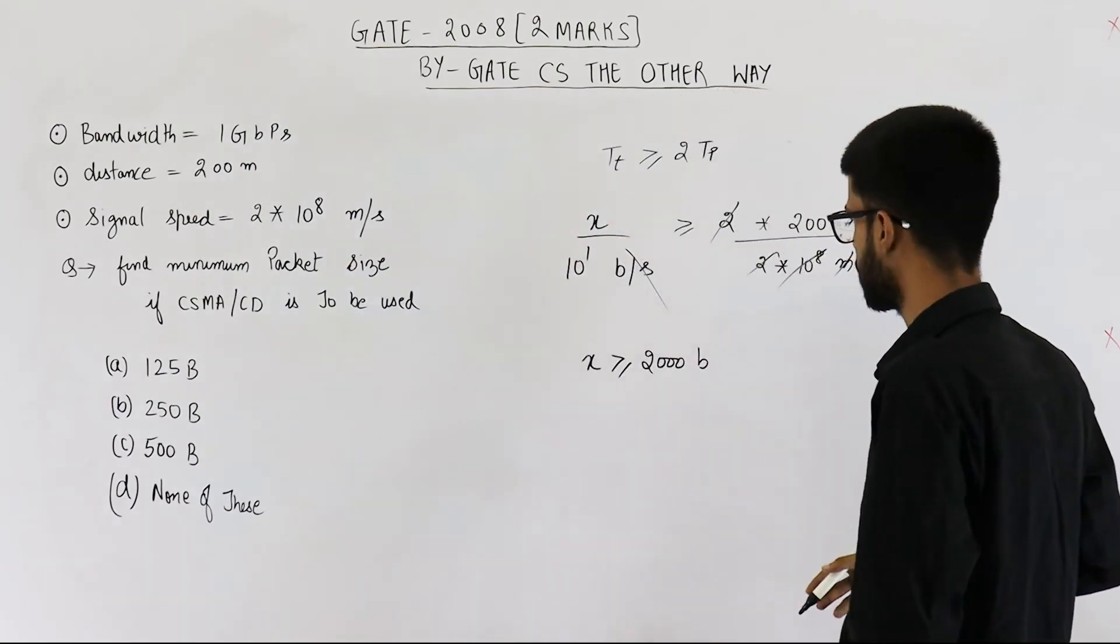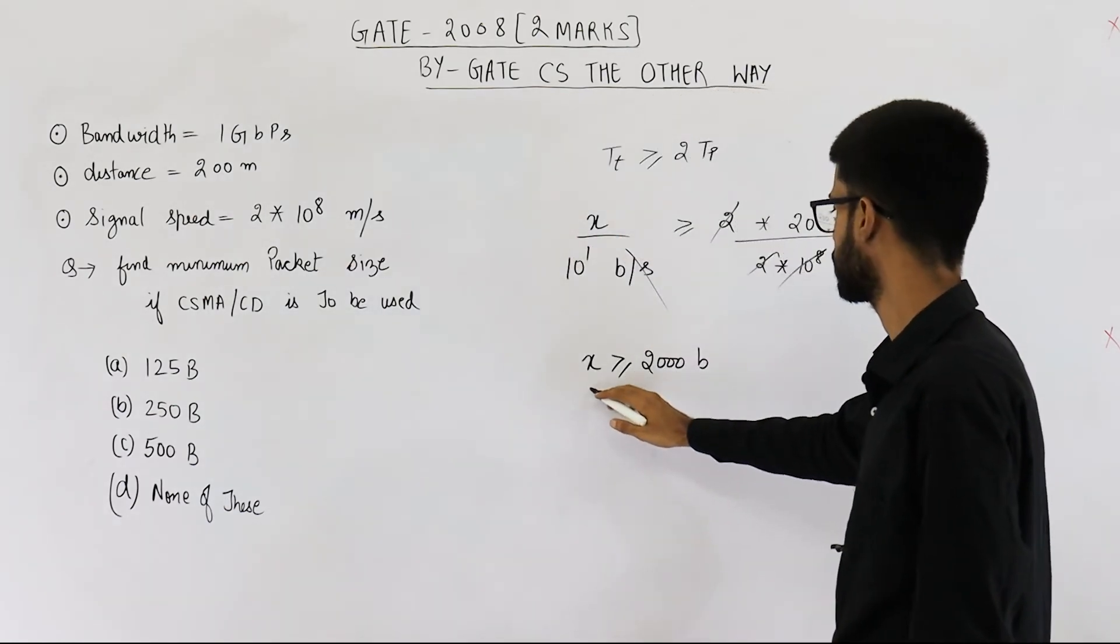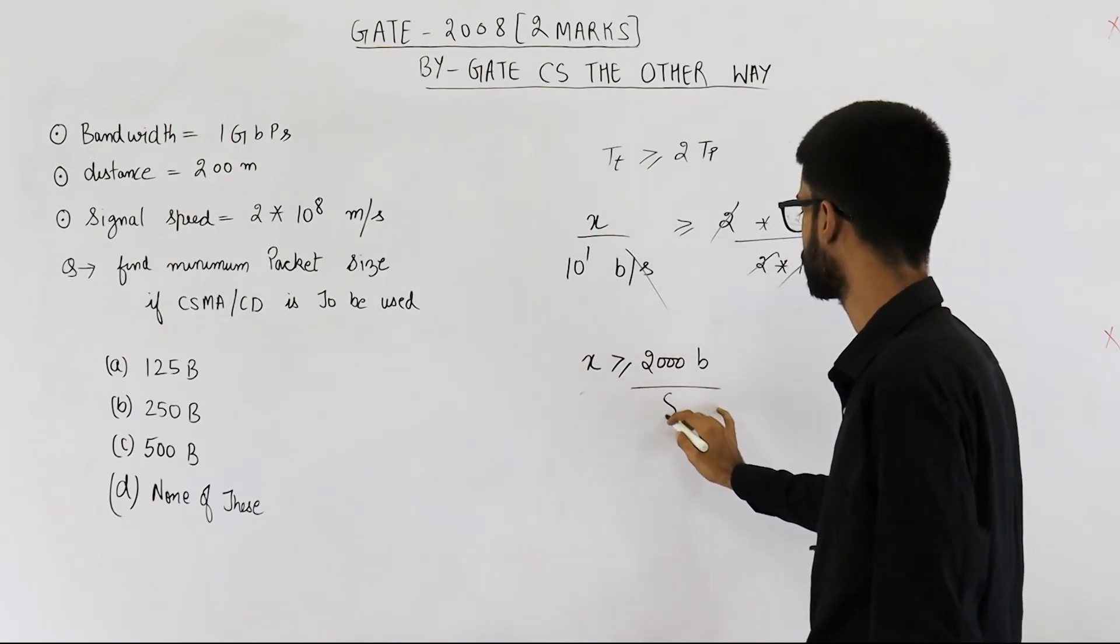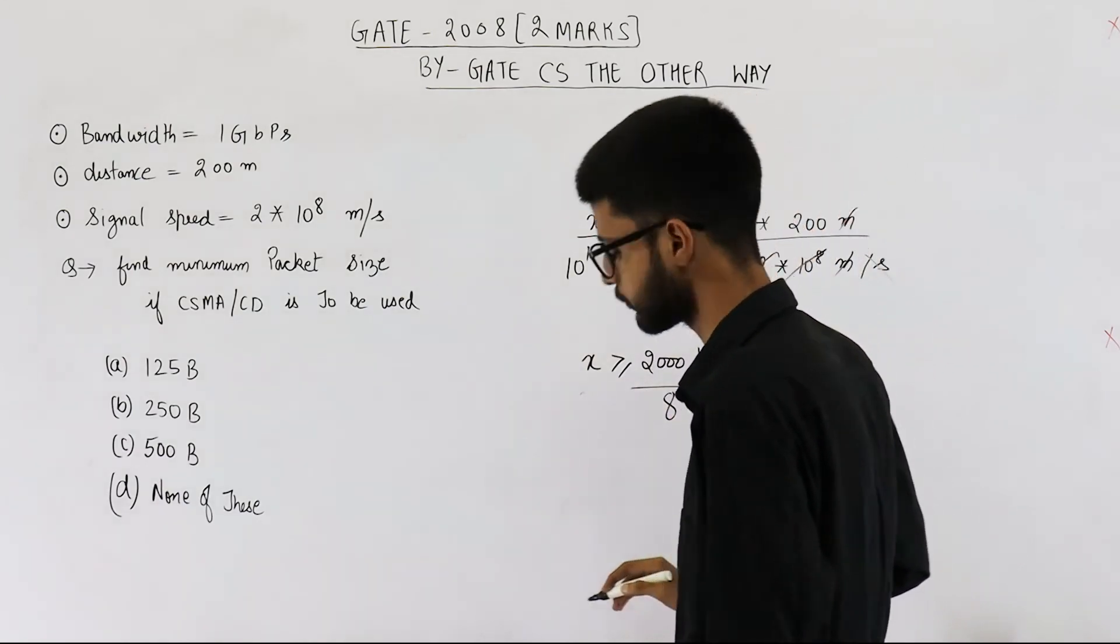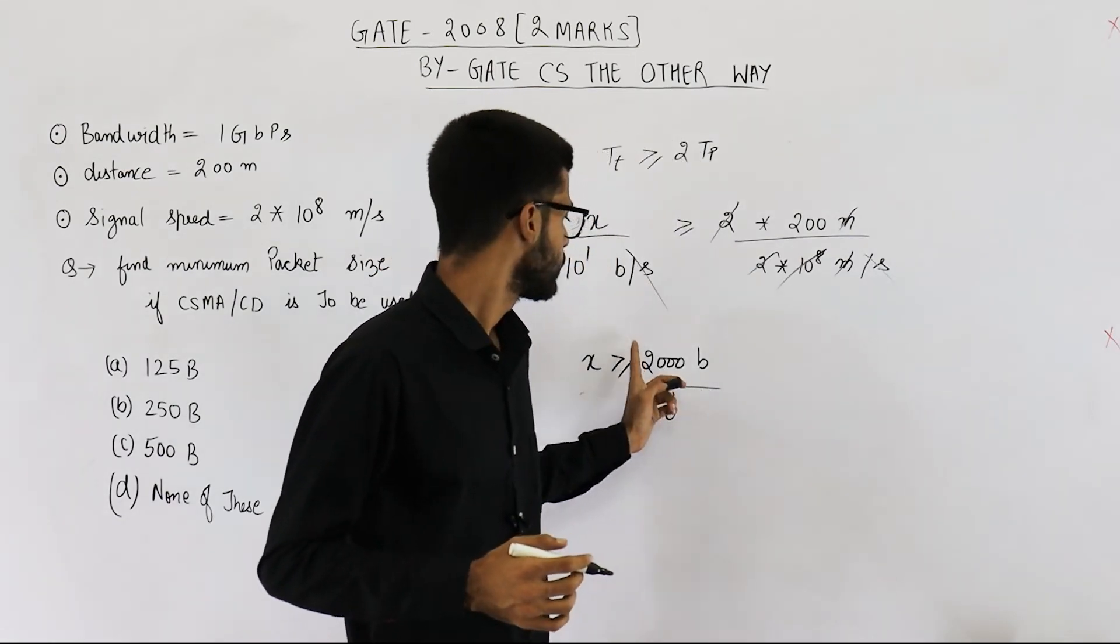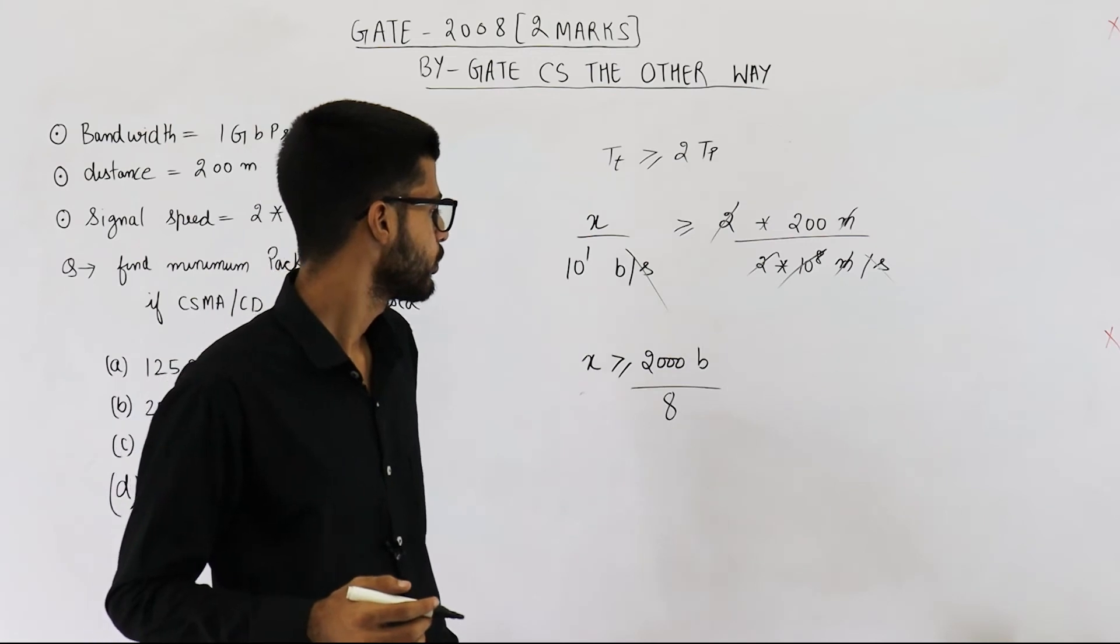Now all the options are in bytes. Let us convert it into bytes only. So divided by 8. This will be 250.